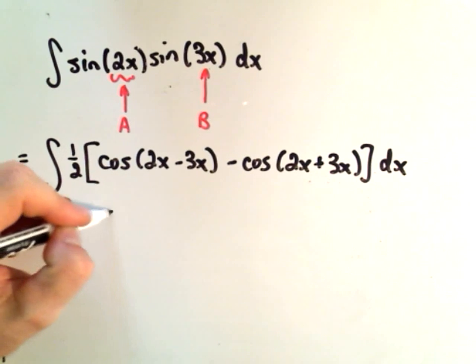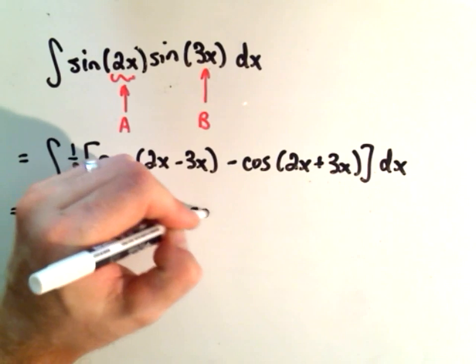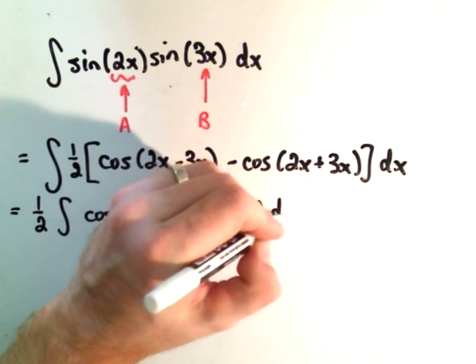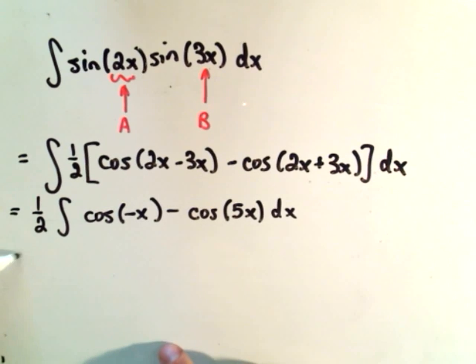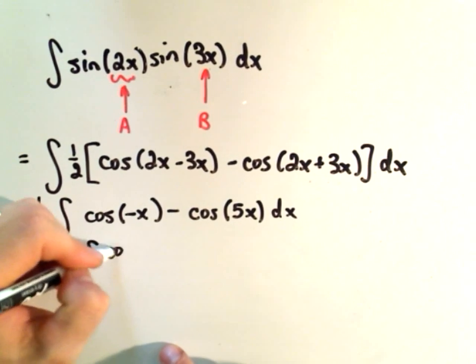This will become cosine of negative x, just like before, minus cosine of this time 5x. You could basically break each piece up. It's the exact same problem now.